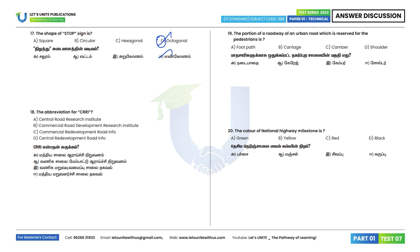18th question: The abbreviation for CRRI stands for Central Road Research Institute. Option A is the correct answer. 19th question: The portion of an urban road reserved for pedestrians is called a footpath. Option A.